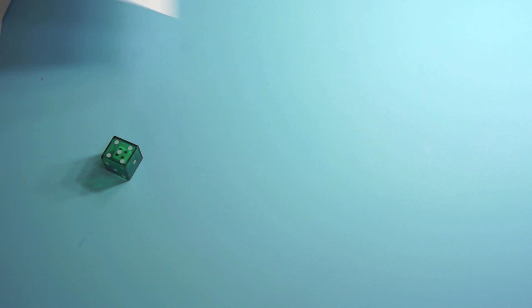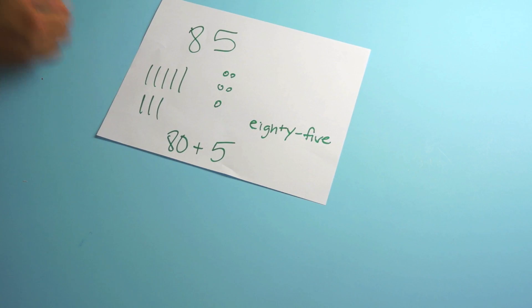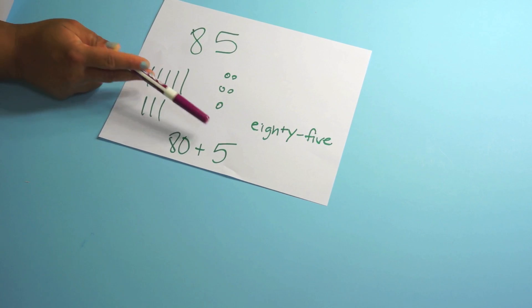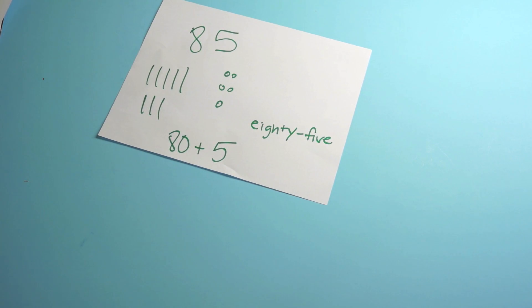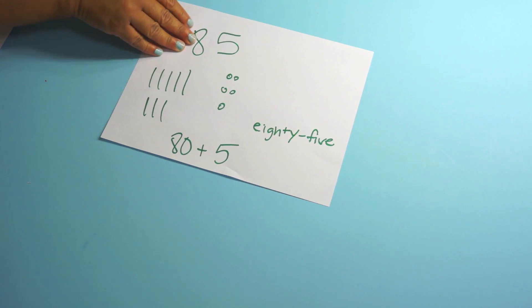Also, I have kids roll the die and then they get the number 85. They have to write the number. They have to show it in base 10 form. They have to write it out in expanded form and they have to write the number word. So that's just a center where they would practice doing that. Tens, hundreds and ones really important.